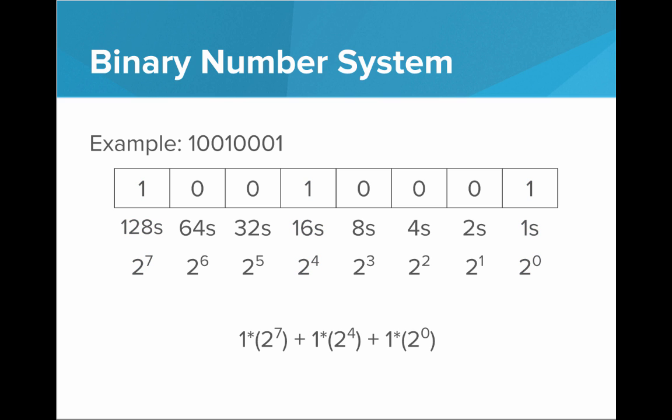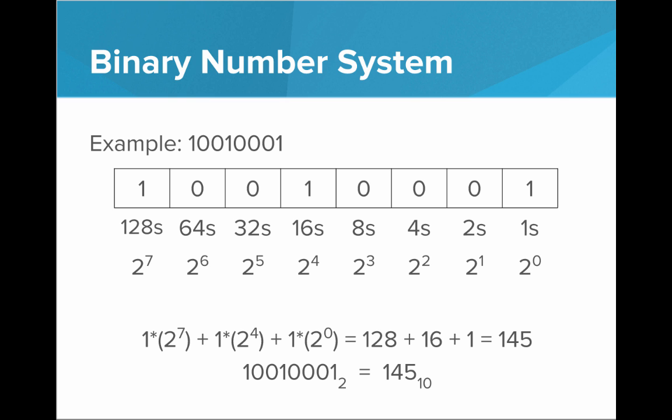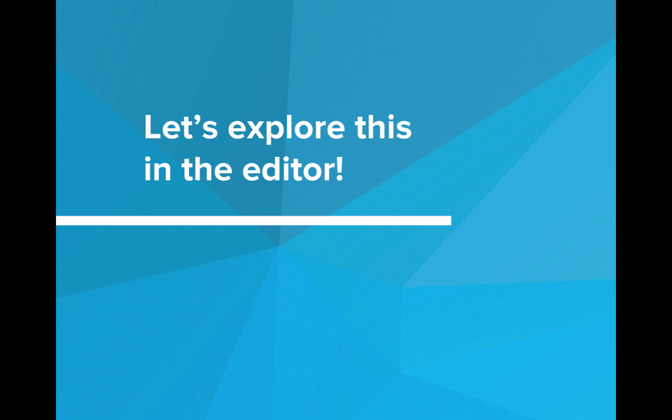This number has 1, 2 to the 7, 1 2 to the 4, and 1 2 to the 0. We have 128 plus 16 plus 1. 128 from this one, 16 from this one, and 1 from that one. When we add all these together, we get 145. So we see that this binary number is actually equal to 145. Let's explore number systems in the editor.